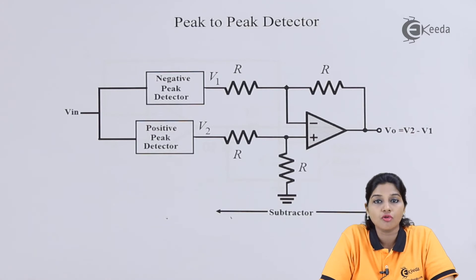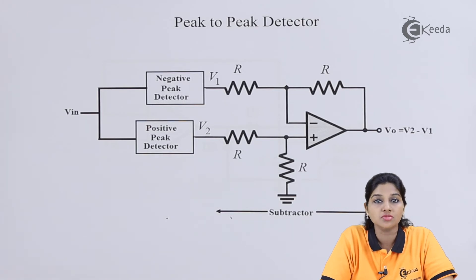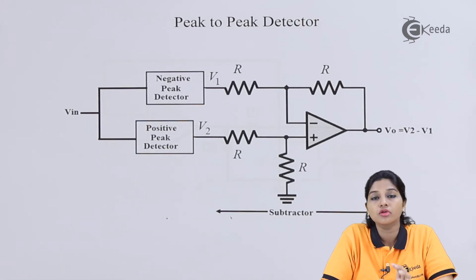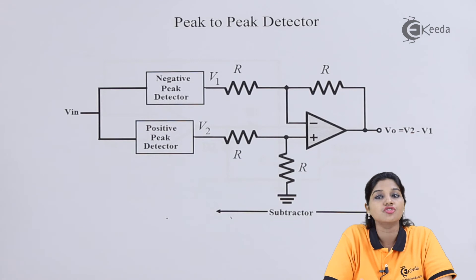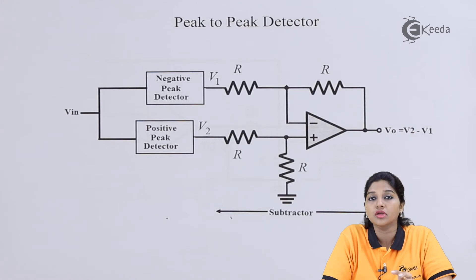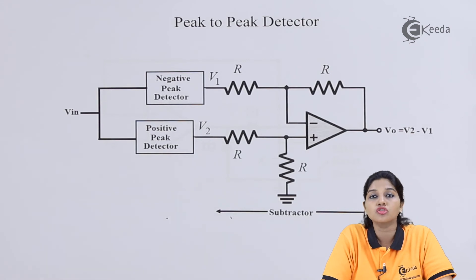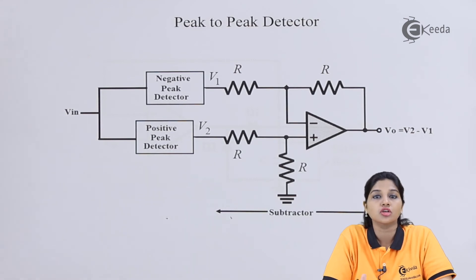The negative peak detector also has two modes of operation: track mode and hold mode. In track mode, the capacitor charges to the maximum negative peak value. In hold mode, the capacitor stores the maximum peak value until the next negative half cycle arrives, at which point the capacitor charges to a new higher value. The input waveform must have increasing magnitude; if the magnitude is the same, the capacitor will show no change in output because the diode will be reverse biased and will not allow the capacitor to charge to a new value.